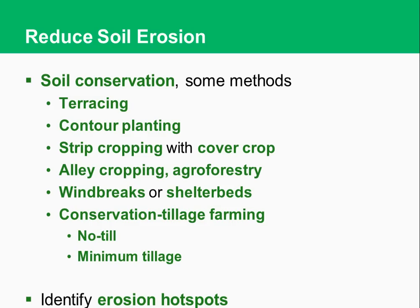Another method is alley cropping, also called agroforestry. You use tall trees to provide shade and reduce water loss through evaporation, helping plants retain moisture and keeping the soil moist through reduced transpiration. Some textbooks just say agroforestry. The trees can provide fruit, fuel wood, and trimmings for mulch, and those leftover trimmings — called green manure — can even be used as feed for livestock.